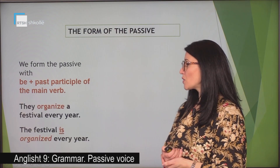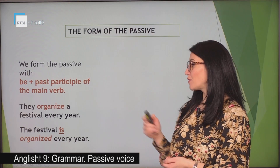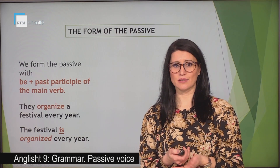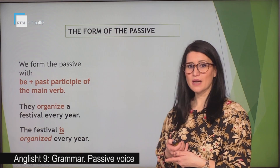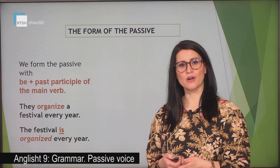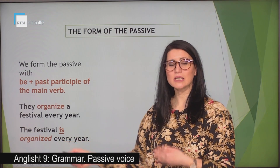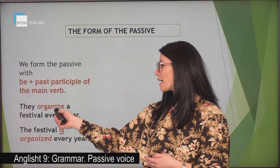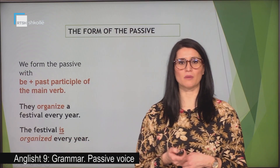For example: they organize a festival every year. Have a look at the verb — the verb is 'organize'. What tense is it? It is in the present simple. So have a look at the other sentence: the festival is organized every year. As we can see, the verb 'to be' is in the present simple, the same as the verb in the active sentence. Then we have the past participle of the verb.